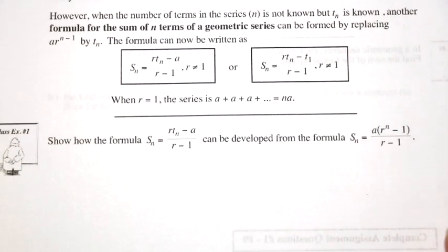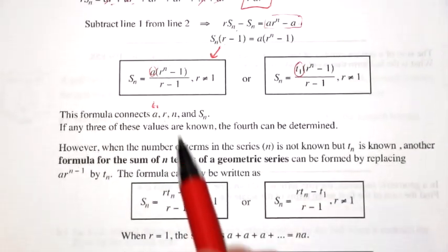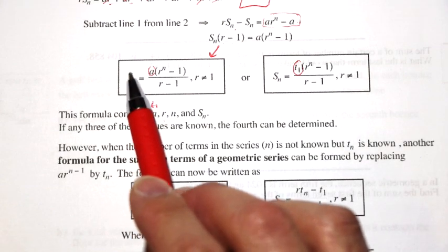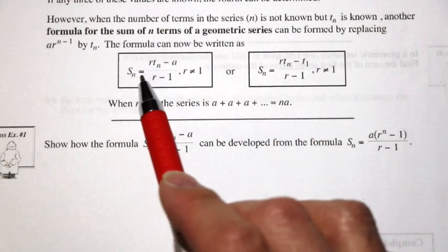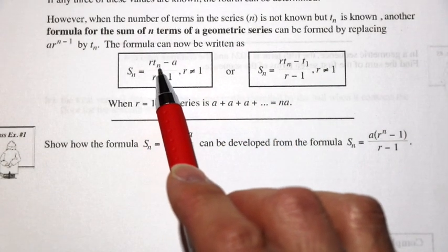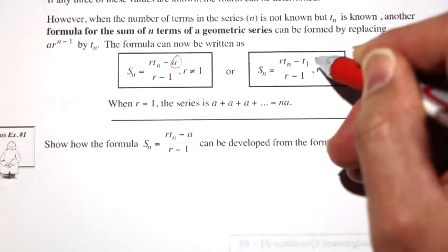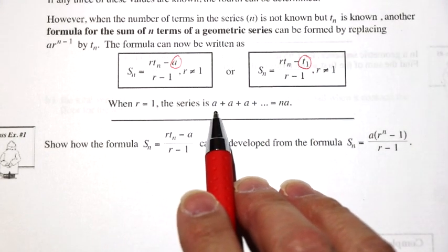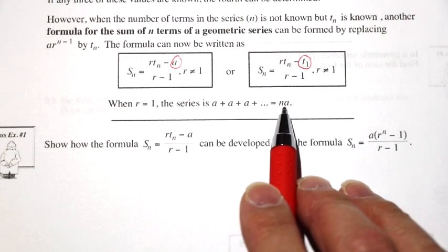We should keep in mind that when the number of terms n is not known, it's really tough to use this formula because we don't know what n is, and if we're trying to find Sn, we need to know n. So there's another version of the formula: Sn equals (r times tn minus a) over (r minus 1). You could also use t1 instead of a here — it's really the same formula. When r equals 1, the series is just a plus a plus a plus a — there are n of those a's — and so it equals na.